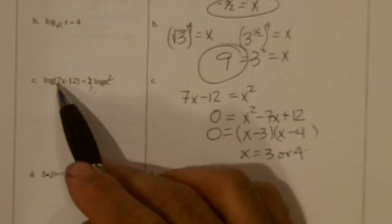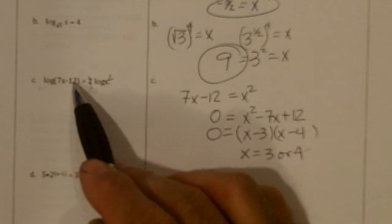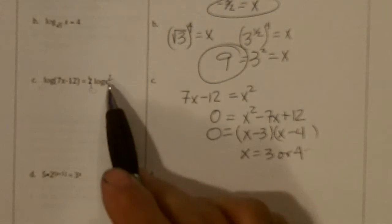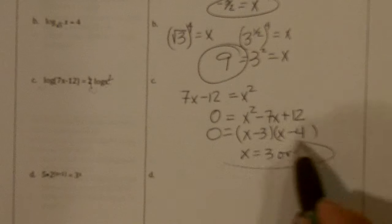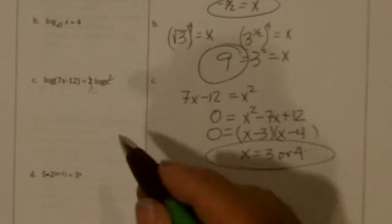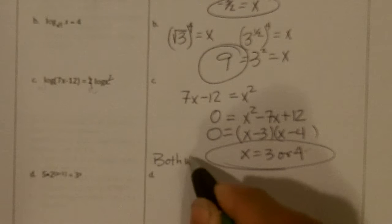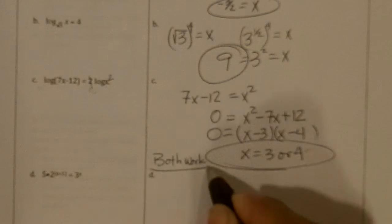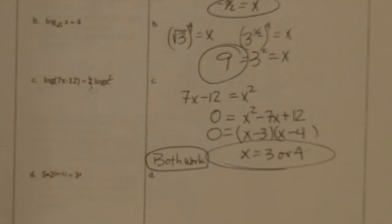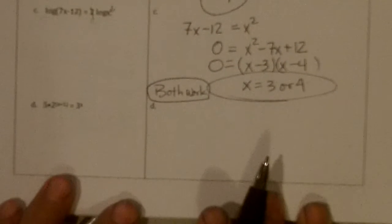3 times 7 is 21, minus 12 is 9, and 3 squared is 9, so both answers work. So you need to show the check on that.